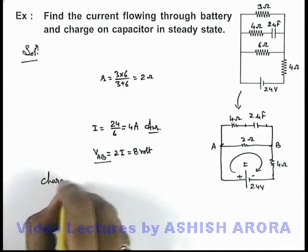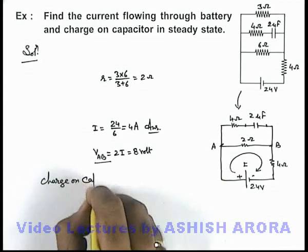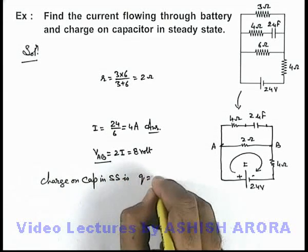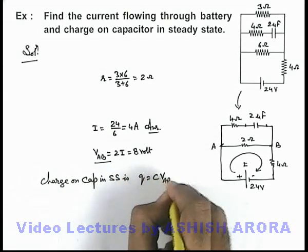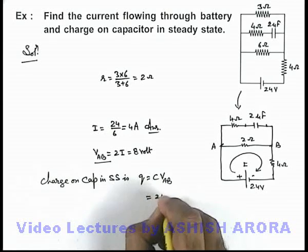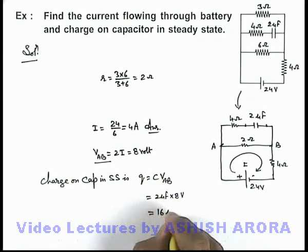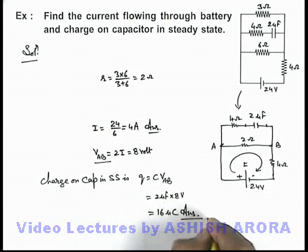So here we can calculate the charge on capacitor. In steady state, this q can be written as C V_AB. That can be written as 2 micro farad multiplied by 8 volt. That will be 16 micro coulomb, that is the another answer to this problem.